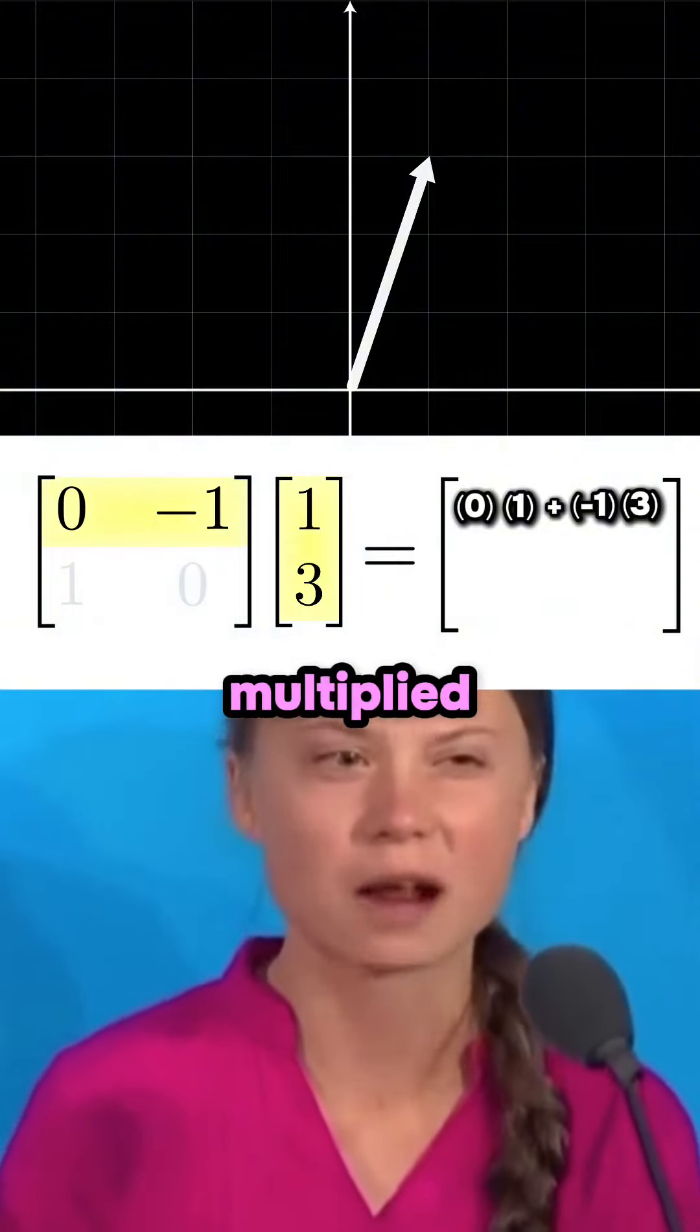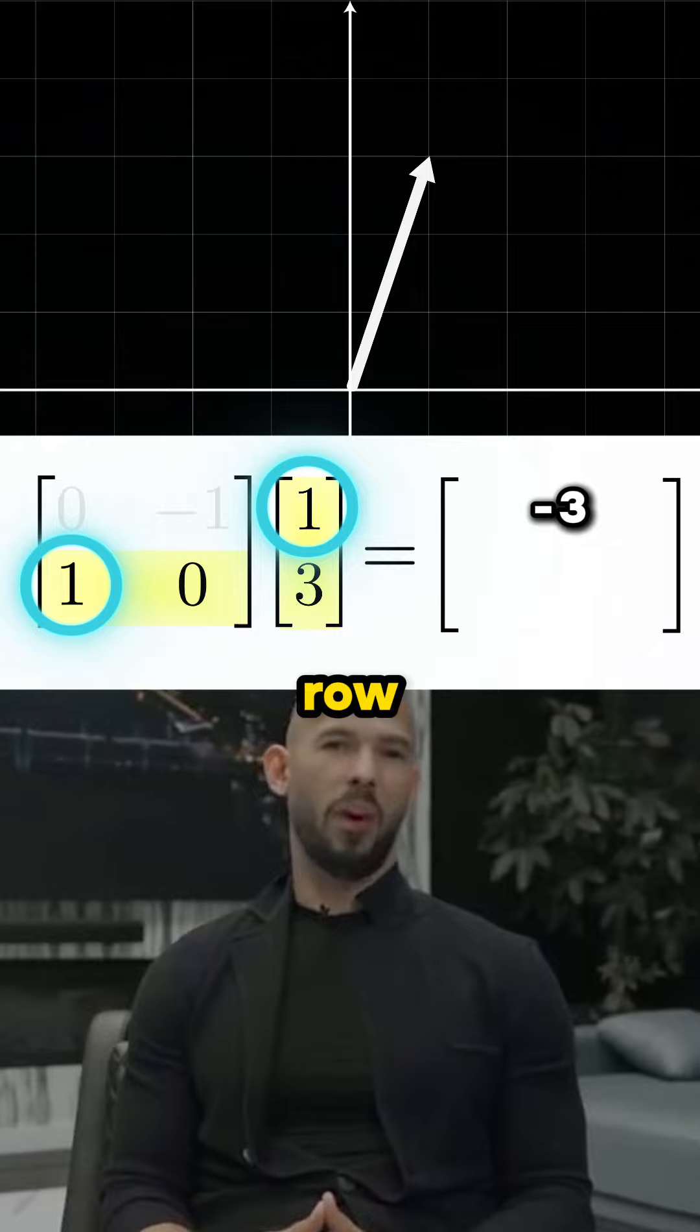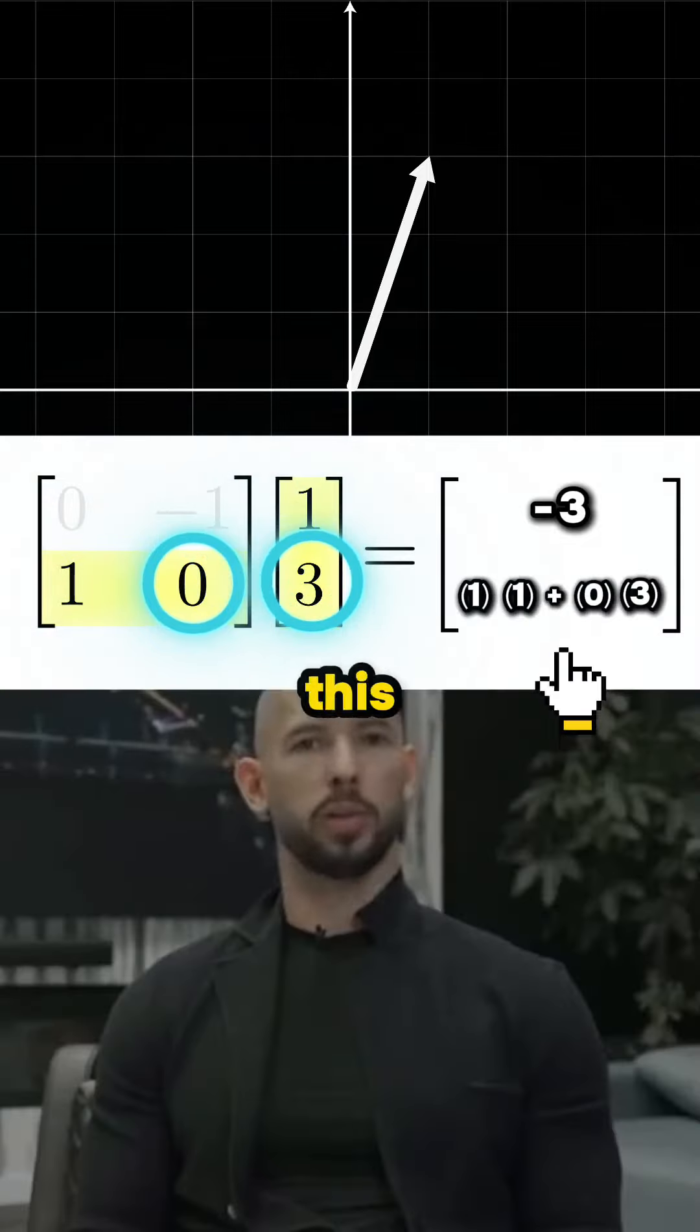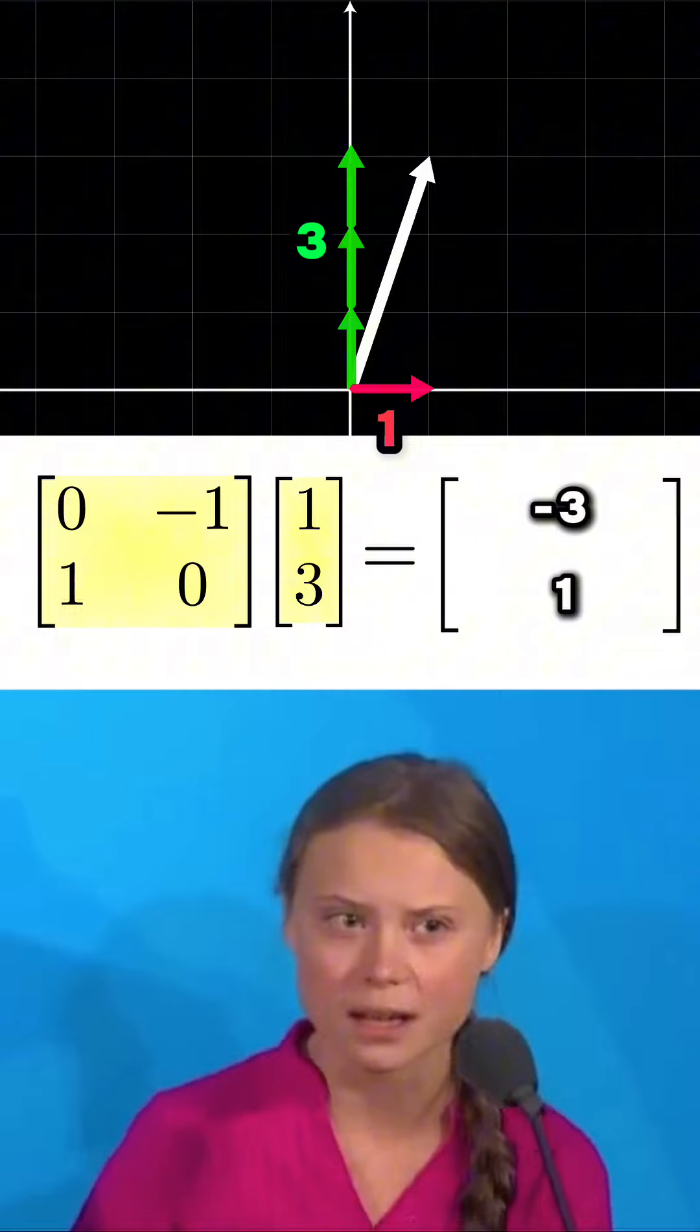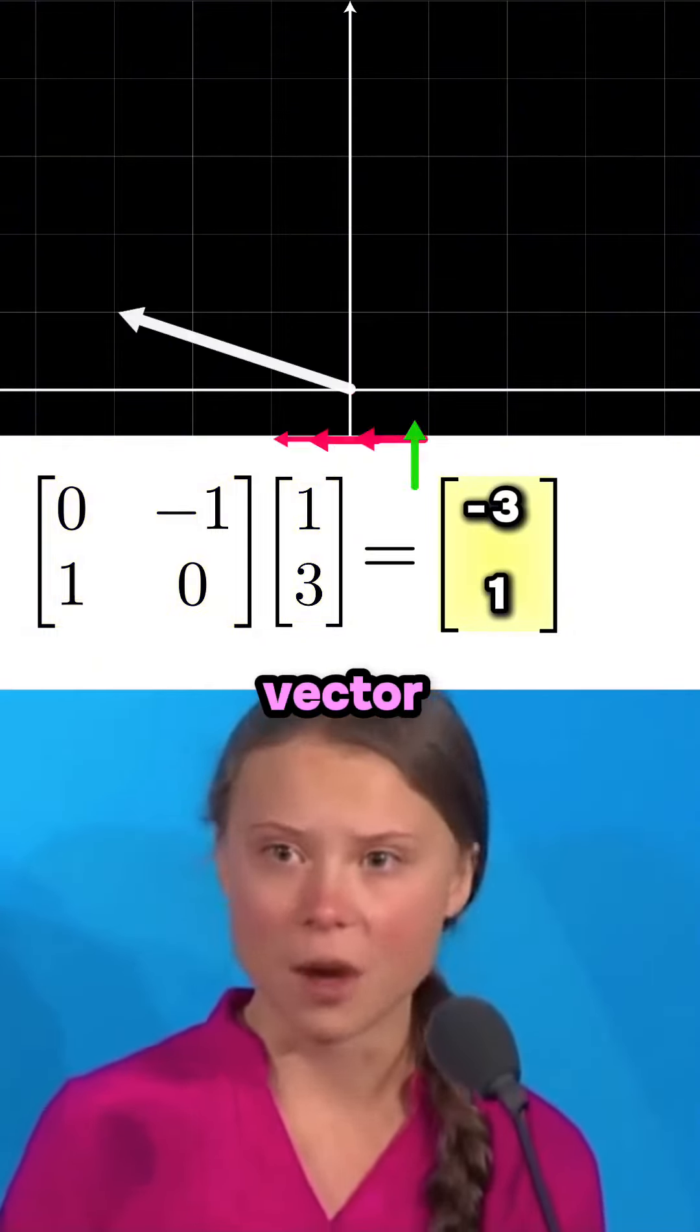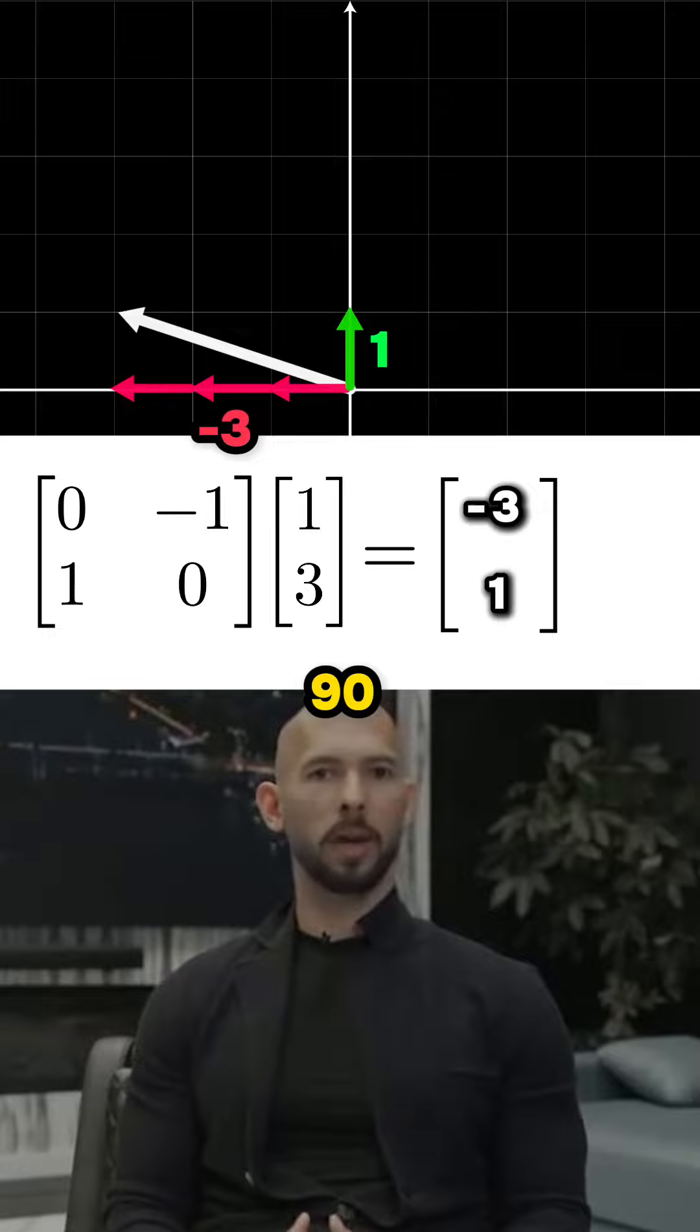The first matrix row multiplied by the vector column gives us the number that goes here. And then the second matrix row multiplied by the vector column gets us this bottom number. So by multiplying the matrix by our original vector 1, 3, we've transformed it into this new vector, minus 3, 1. Oh, so this matrix turns vectors anti-clockwise? A perfect 90 degree rotation.